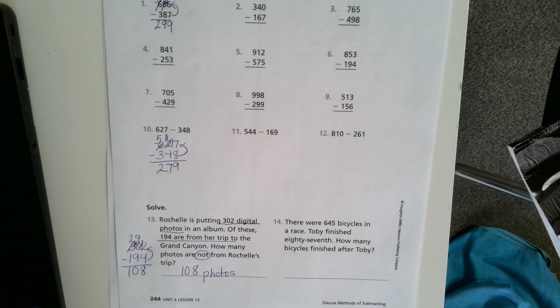So today in your work on Things Central, you're going to be doing 4.13. Make sure you have scratch paper, because you're going to have to do one of these methods, either ungrouping from the left or ungrouping from the right, on paper to get your answer. Don't forget to turn it in when you're done.